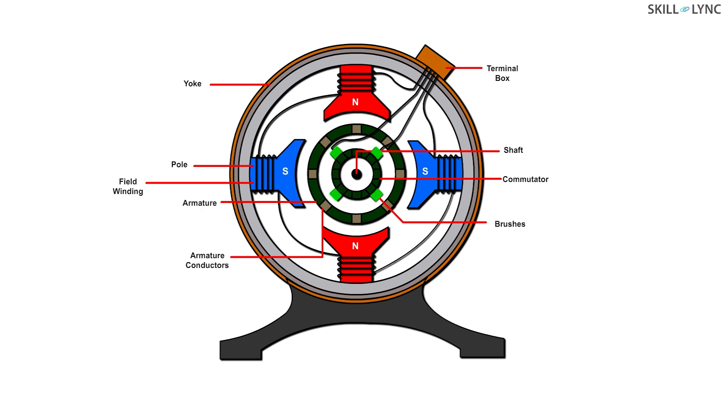Now, let's take a look at the brushes on the commutator. These brushes rest on the commutator and slide along it as it rotates. The armature and the commutator are placed on a shaft.